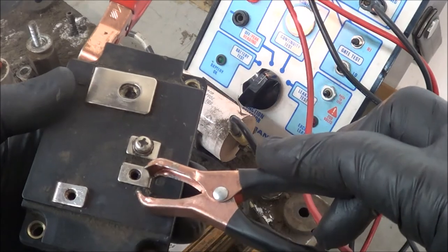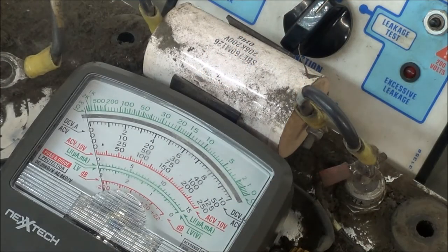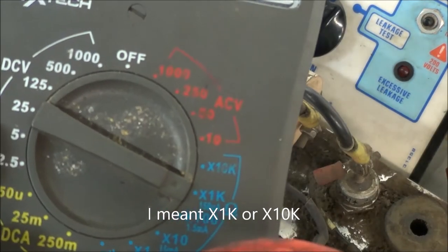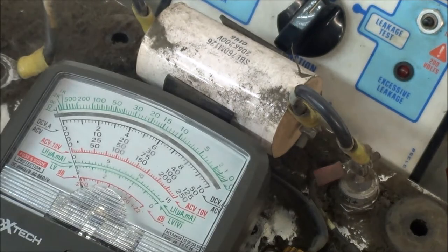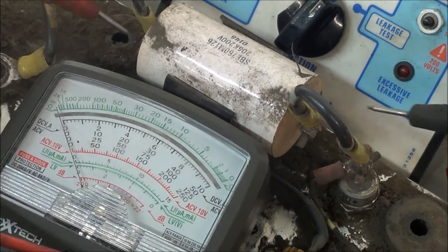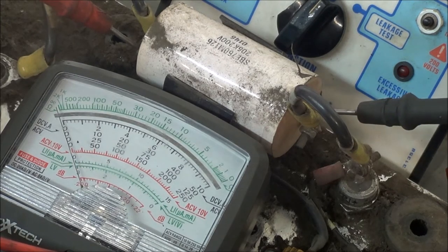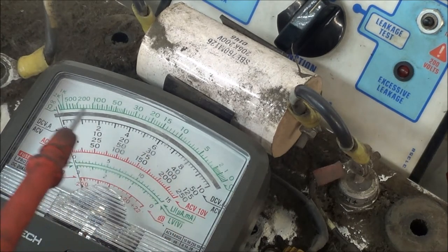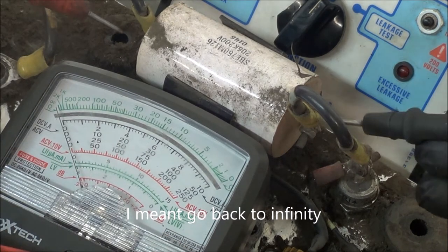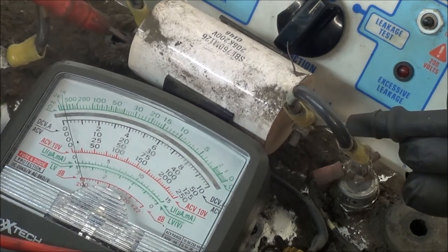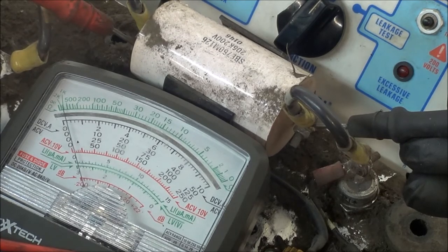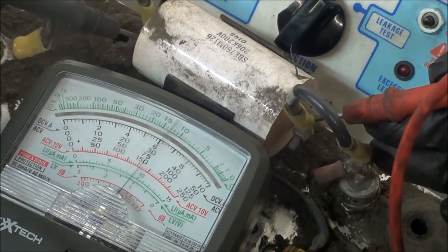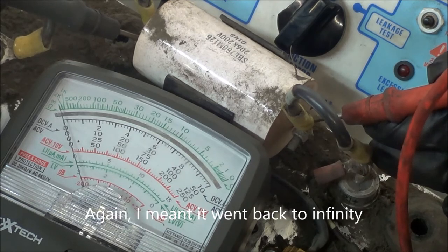Next component that we're going to be testing out is this capacitor. The way I test this capacitor is I put my meter on x1 or x10, zero the meter, and then I would just touch my positive and negative leads on ends of the capacitor, and then I would watch the needle go to the right-hand side and then slowly go back to zero. See that, it goes back to zero. Then switch up the leads, do the same thing, goes back to zero fully. Do it again one more time.